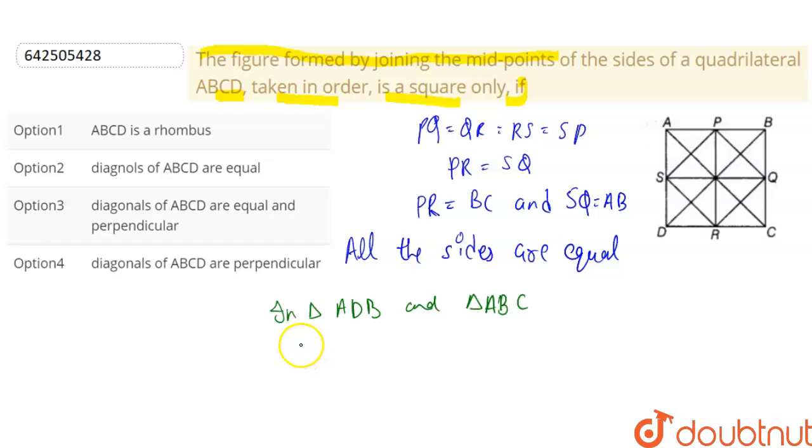So in triangle ADB, SP is parallel to DB and SP is half of DB. And in ABC, similarly, PQ is parallel to AC and PQ is half of AC.